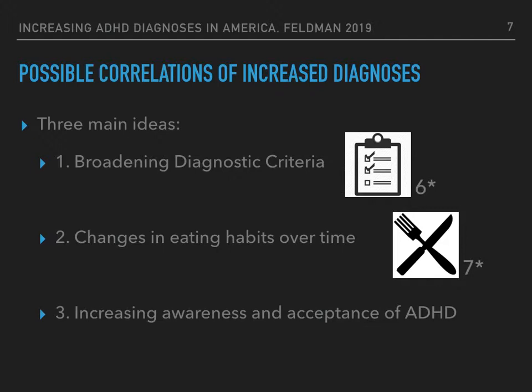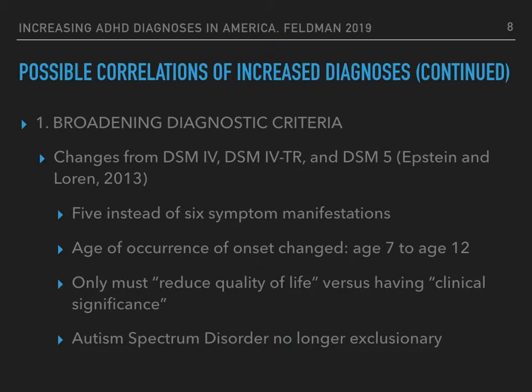First, let's look at the broadening diagnostic criteria. Changes from the DSM-4, the DSM-4-TR text revision, and the DSM-5 are largely noted here. There are now 5 instead of 6 symptoms that need manifestation to occur, and the age of onset has changed from up to age 7 to up to age 12. This widens both categories in terms of age and minimum symptom manifestation. The symptoms now only must reduce quality of life in certain areas versus having clinical significance. It's also important to note that autism spectrum disorder is no longer an exclusionary principle.